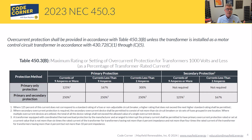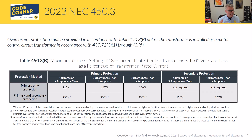For currents of 9 amps or more with primary and secondary protection: on the primary side, the maximum size for the overcurrent protection device is 250% of the transformer's current rating. This is different from what we're used to for conductors. One big reason for the higher rating is transformer inrush — when you energize the transformer, there's a large inrush of current and we don't want to trip the overcurrent device just from turning it on. On the secondary side, for 9 amps or more, we size protection at 125%, which feels much more normal.